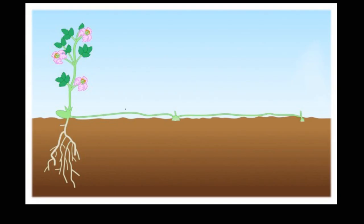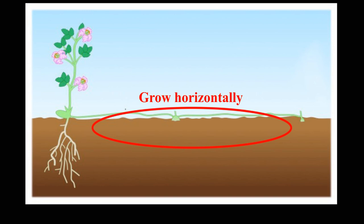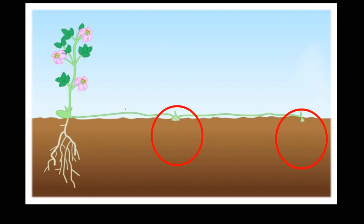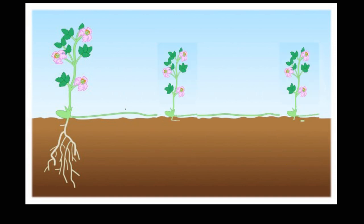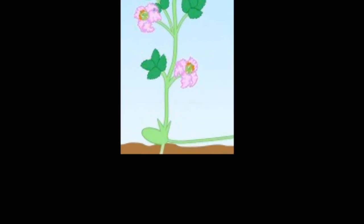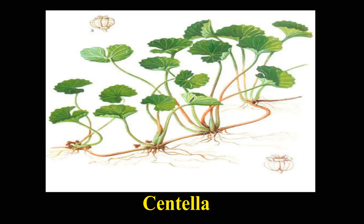Runner: As the name suggests, these stems run or grow horizontally on the surface of soil. The place where the node of these stems touches the soil, new roots and shoots are formed. From here, it detaches from the parent plant and grows on its own. Centella plant has a runner stem.